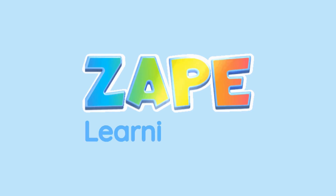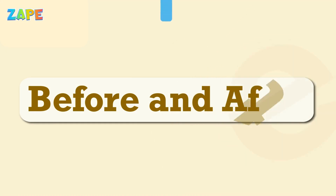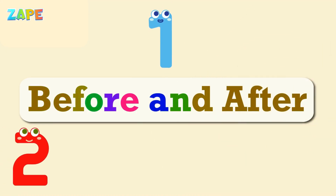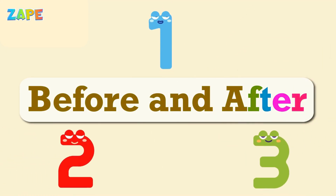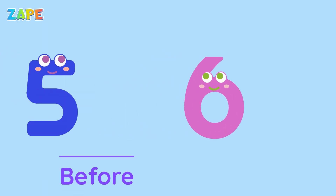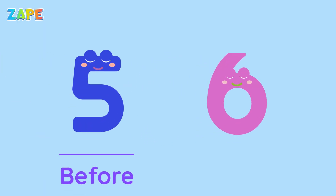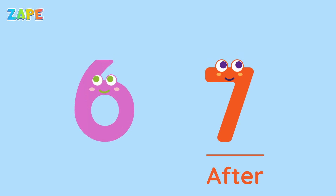Welcome to ZAPE Learning App. Look at this number: 6. The number that comes before 6 is 5. The number that comes after 6 is 7.